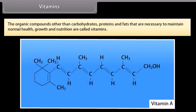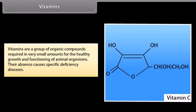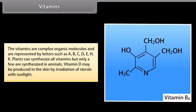Vitamins: The organic compounds other than carbohydrates, proteins, and fats that are necessary to maintain normal health, growth, and nutrition are called vitamins. They are required in very small amounts; their absence causes specific deficiency diseases. They are complex organic molecules represented by letters such as A, B, C, D, E, H, and K. Plants can synthesize all vitamins, but only a few are synthesized in animals. Vitamin D may be produced in the skin by irradiation of sterols with sunlight.